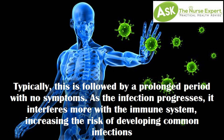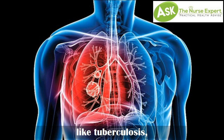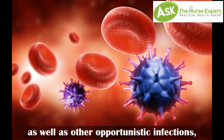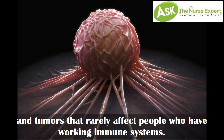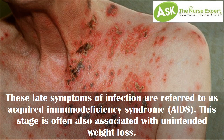Typically, the initial illness is followed by a prolonged period with no symptoms. As the infection progresses, it interferes more with the immune system, increasing the risk of developing common infections like tuberculosis, as well as other opportunistic infections and tumors that rarely affect people with working immune systems.